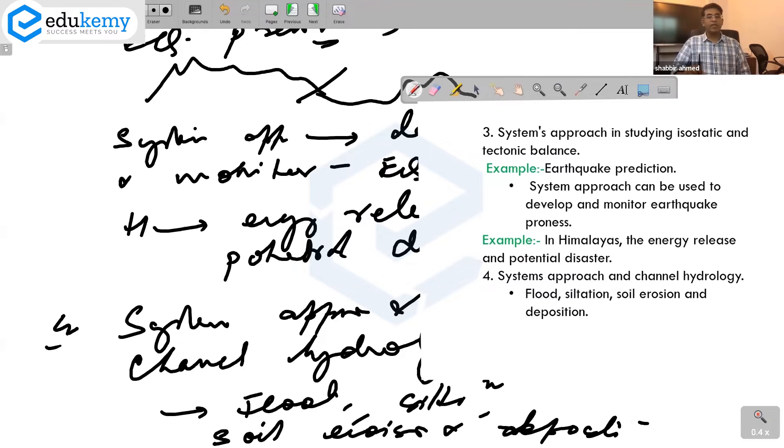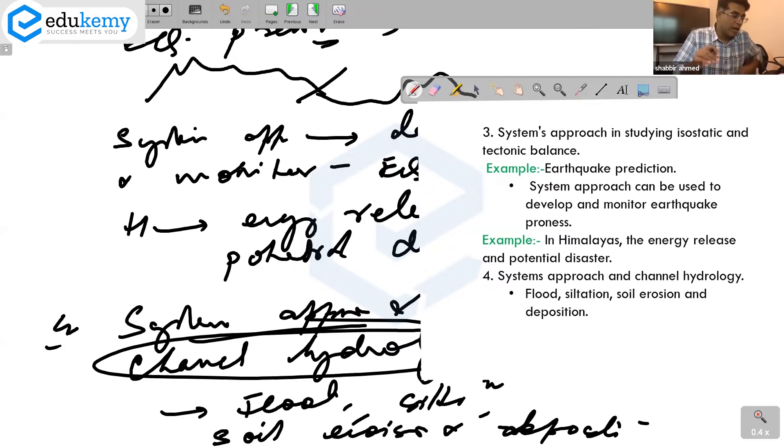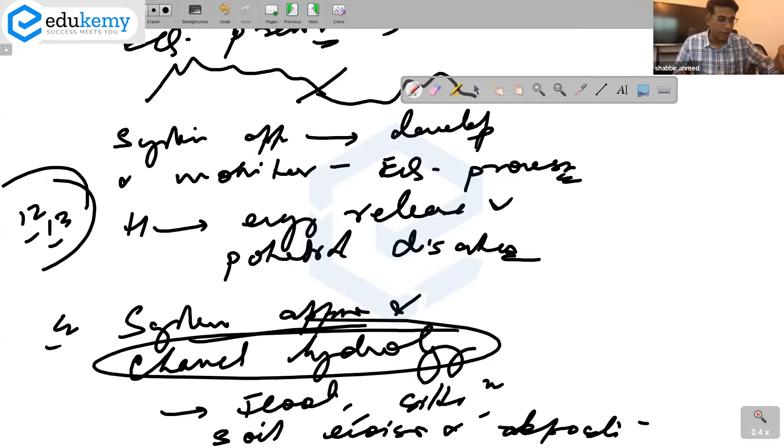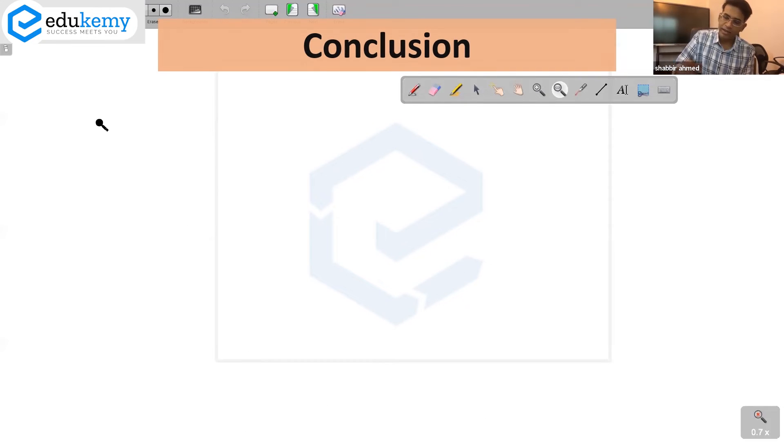If you look up page number 12 and 13, this is not exactly the way I've taught you because the question was the application of systems approach in geomorphology. These two pages tell you something about what systems approach is. Page 13, the second paragraph, has something about understanding negative feedback in the slope stability.